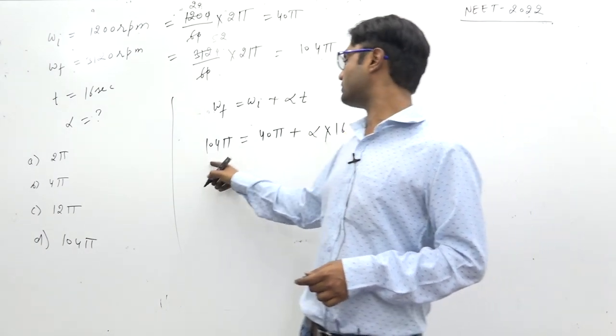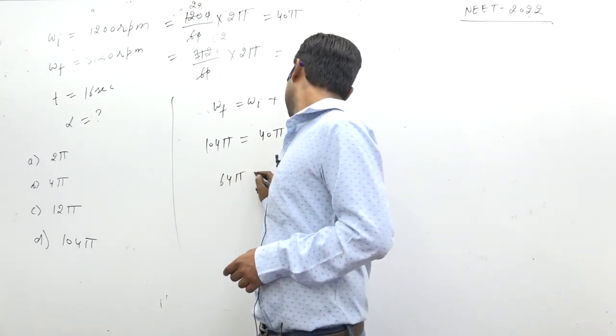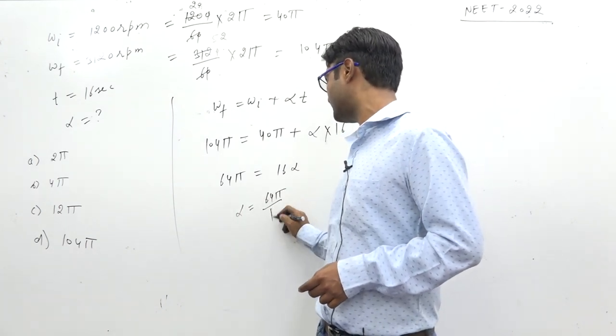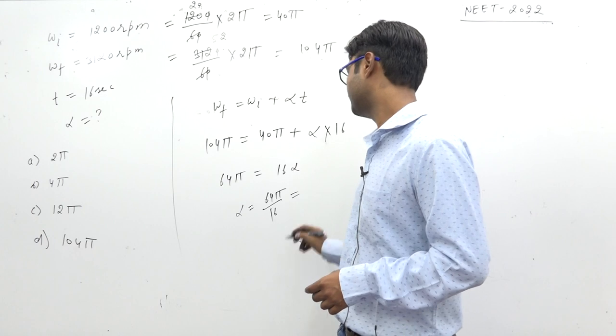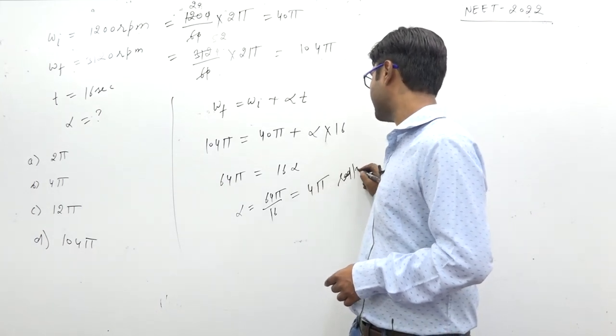64π by 3 is equal to, so alpha, alpha ki value, 64π by 3 divided by 16. 4π radian per second square.